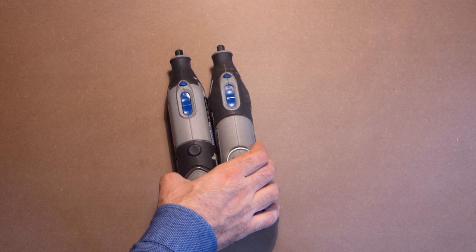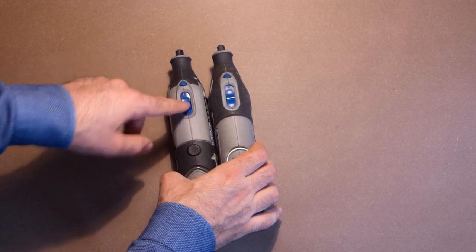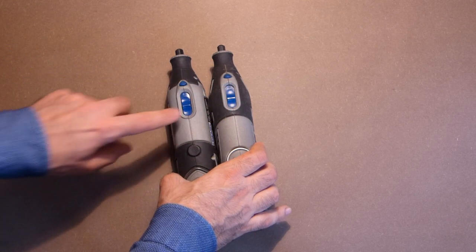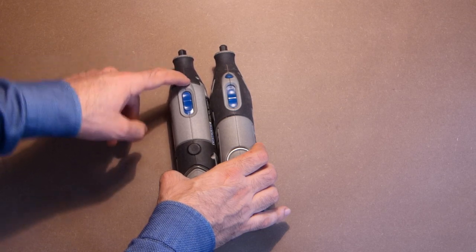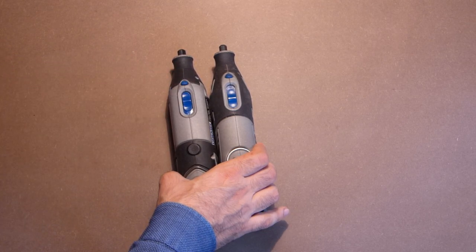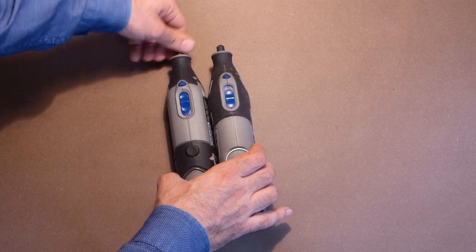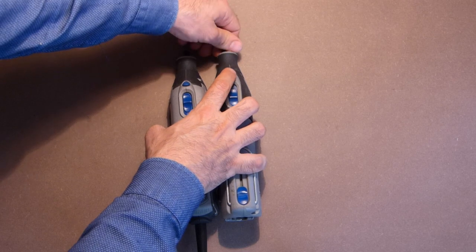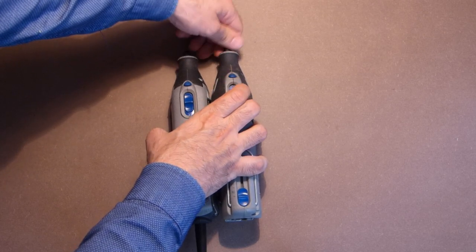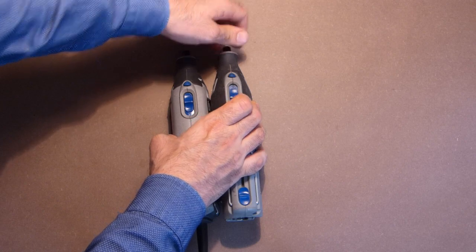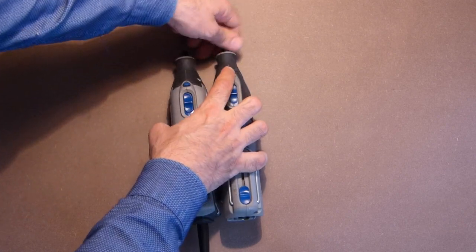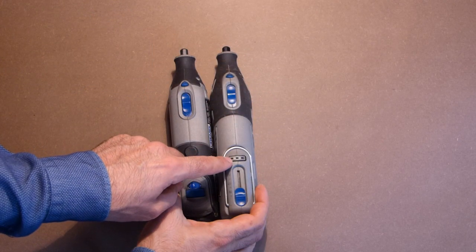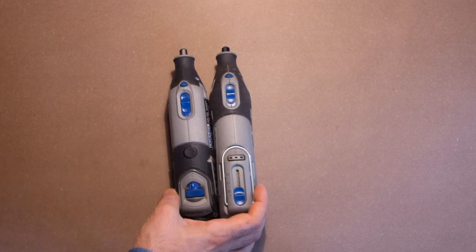We can turn both devices on the same way. And as soon as we turn them on this mechanism is blocked, so we can't damage the motor which rotates. Also we have the battery indicator for the wireless tool. Let's check the speeds.